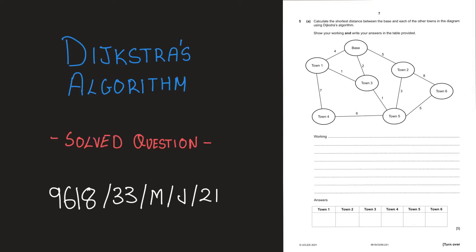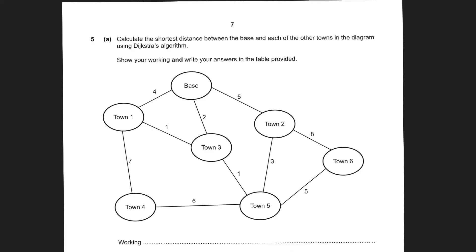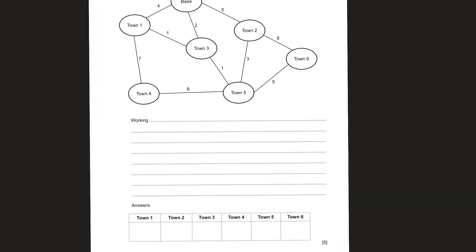In the last video we saw how Dijkstra's algorithm works. In this video let's solve a question — here is the paper code if anyone is curious. The question asks us to calculate the distance between the base and each of the other towns in the diagram. We have to show our working and write the answers in the table below.